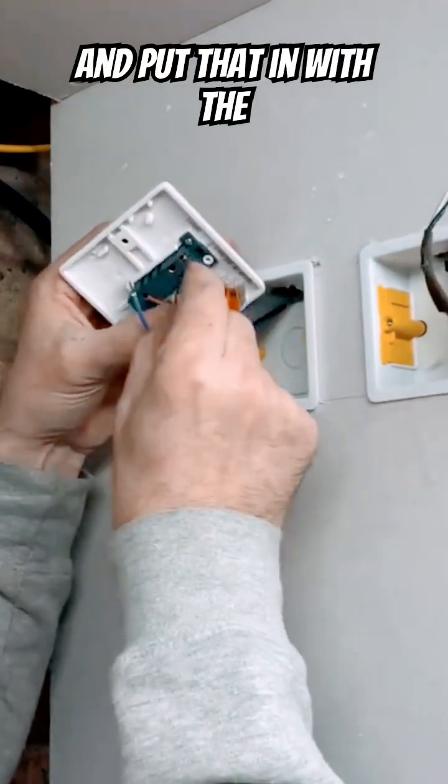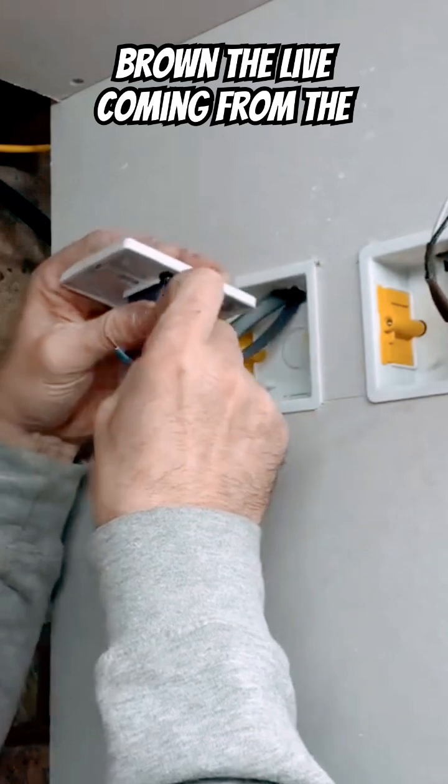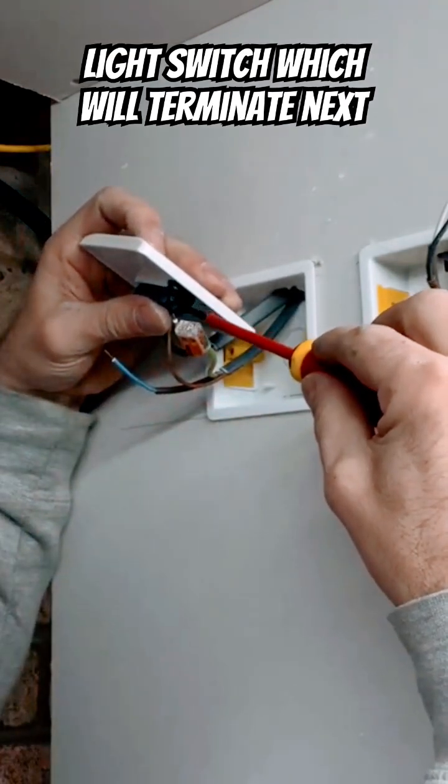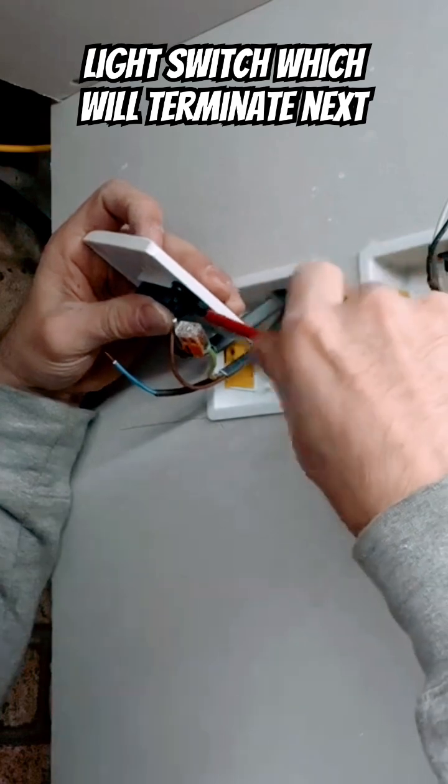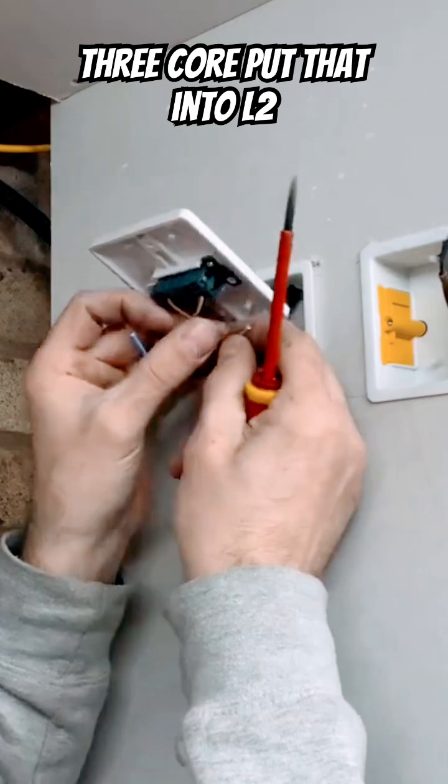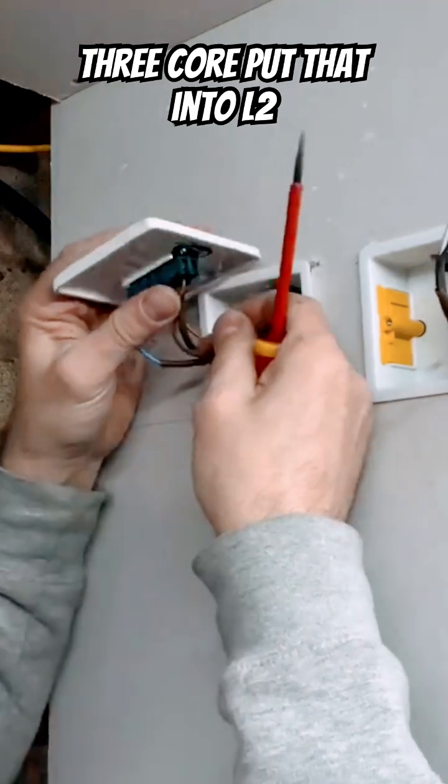And put that in with the brown, the live coming from the light switch which will terminate next. And then the grey from the three core, put that into L2.